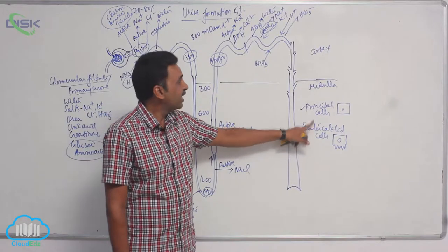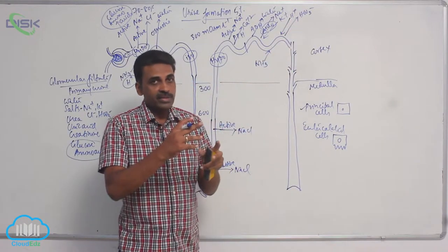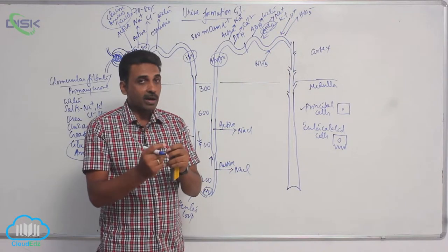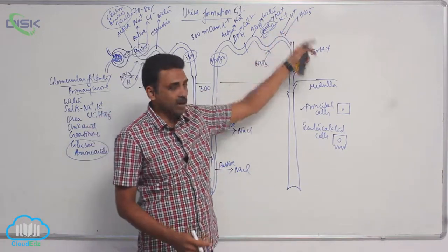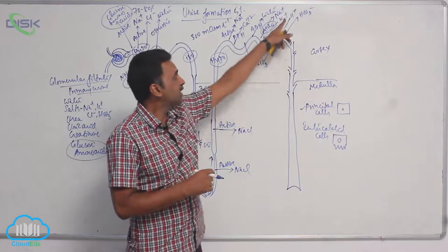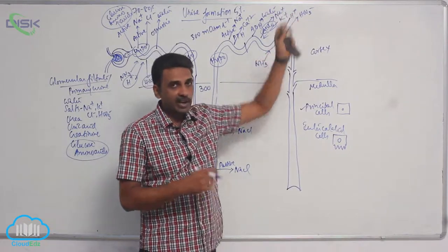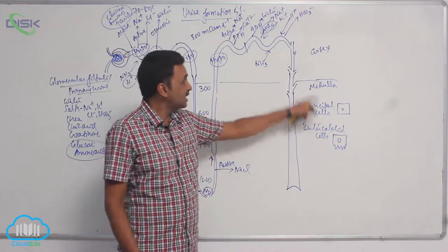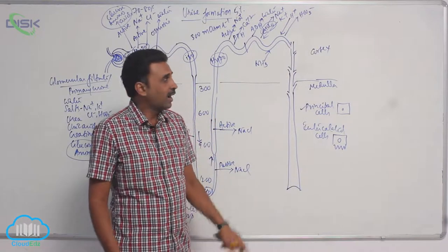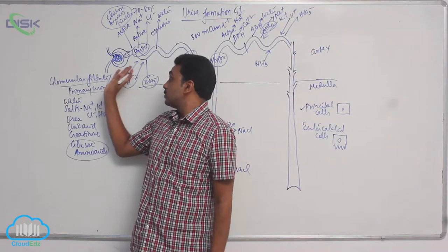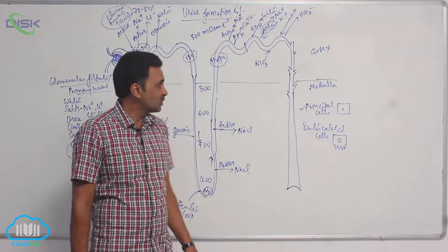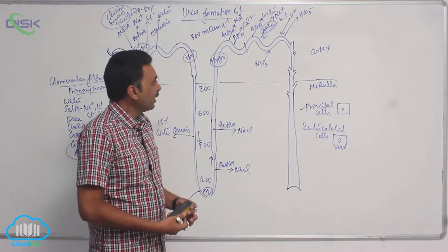Intercalated cells push out H+ ions and absorb bicarbonate ions. For every H+ ion pushed out, it will absorb one bicarbonate. The cells are specialized for that. In this area, ammonium is also being secreted, like in the proximal convoluted tubule.